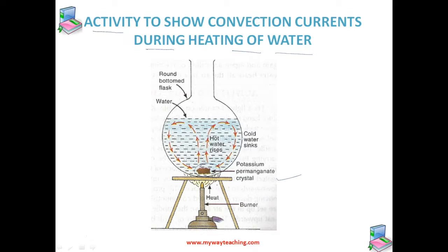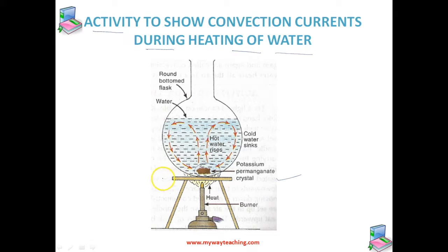This crystal dissolves slowly and forms a purple colored solution around itself. When we heat the water at the bottom of the flask by keeping a burner below it and observe the movement of the hot water, we will see purple streaks of hot water rising from the bottom of the flask to the surface, and then sinking downward near the walls of the flask — as shown in this figure. This movement shows the convection currents taking place in the water.